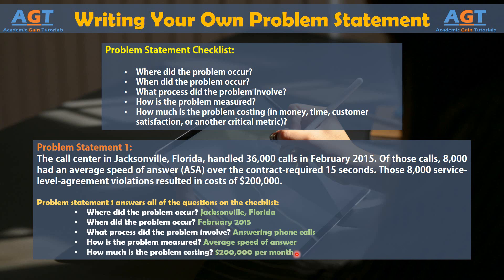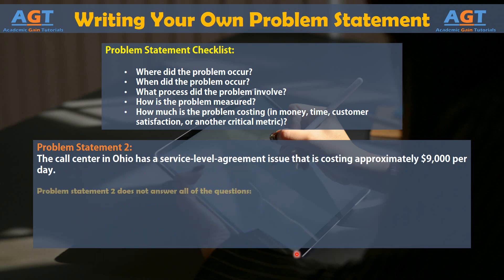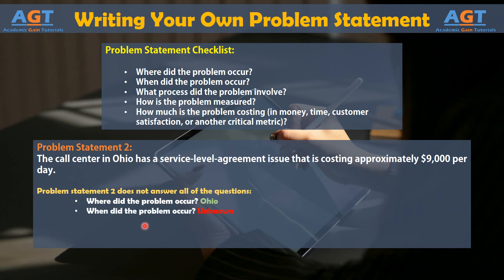Now, problem statement 2 does not answer all of the questions. Where did the problem occur? The answer is Ohio. When did the problem occur? The answer is unknown.